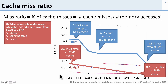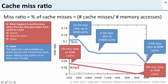What happens to performance when the miss ratio goes down from 10.5% all the way to 3.5% for LBM? It's going to make the program run faster. We may not know exactly how much, but if it's hitting in the cache more often, all those memory instructions will run faster, so we expect the program to go a lot faster.